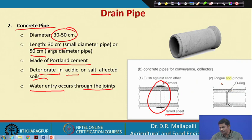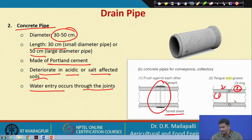Concrete pipes for conveyance and collectors use joints made of cement and sheet, or a tongue-and-groove connection. Two pieces are joined by an O-ring.